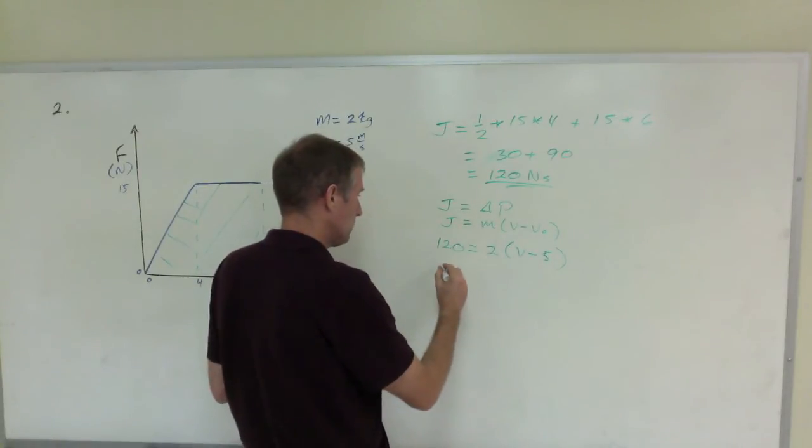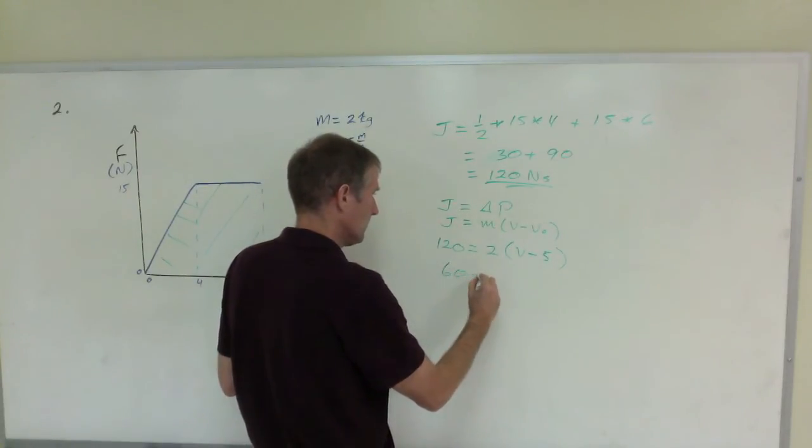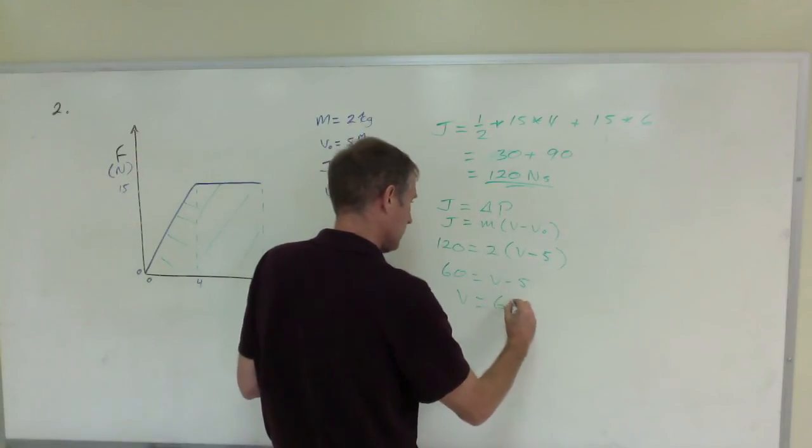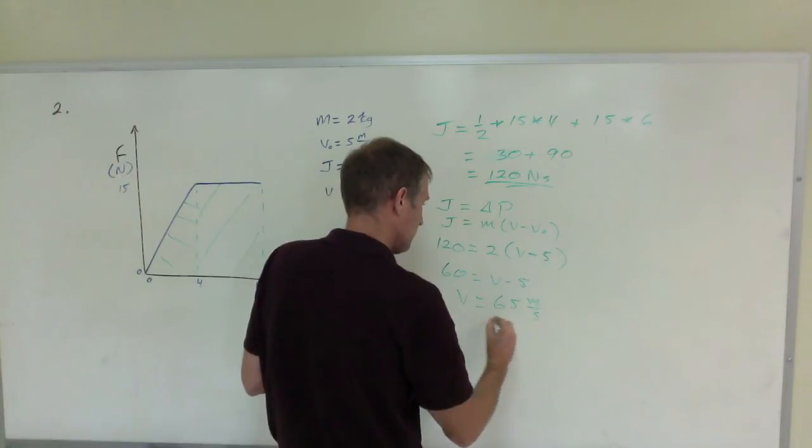120 divided by 2 is 60 equals V minus 5. And so V equals 65 meters per second.